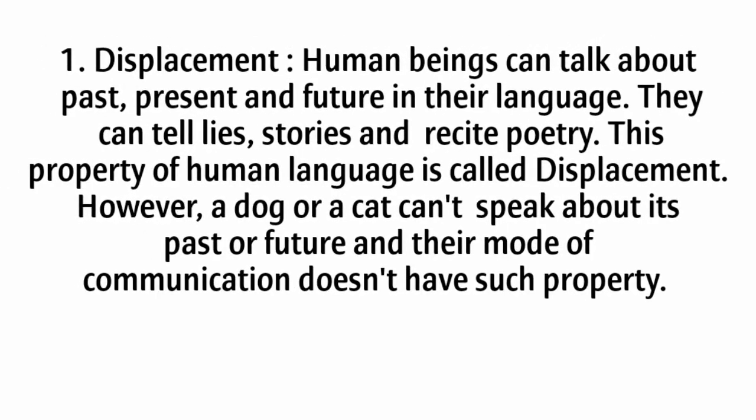1. Displacement. Human beings can talk about past, present, and future in their language. They can tell lies, stories, and recite poetry. This property of human language is called displacement. However, a dog or a cat can't speak about its past or future, and their mode of communication doesn't have such property.